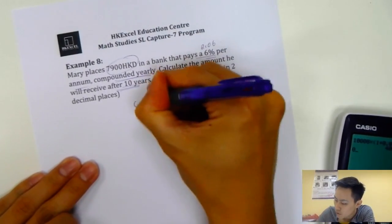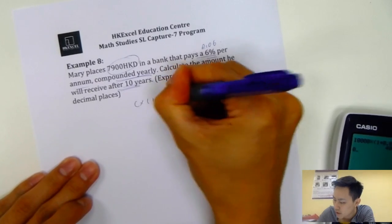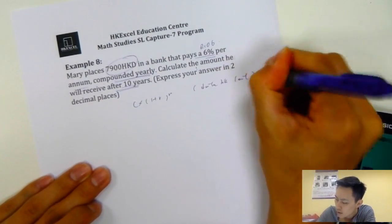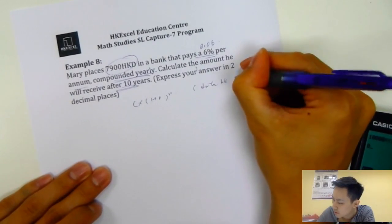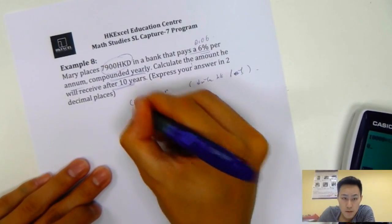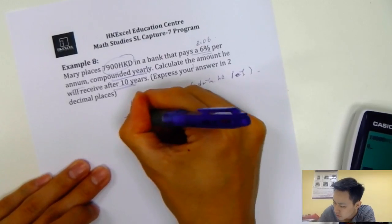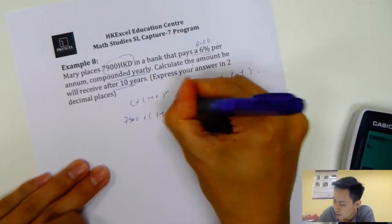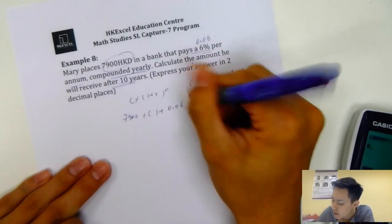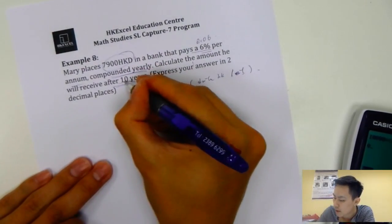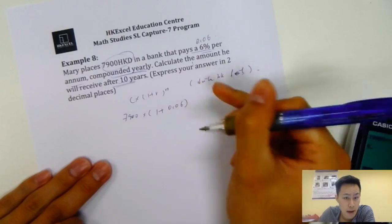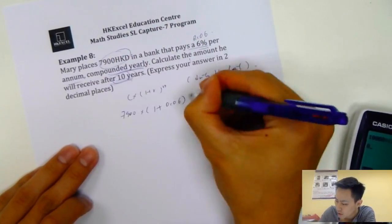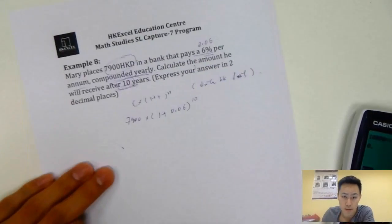How do you do that? First, you need to use the equation Z times 1 plus r power n. This is on the data booklet. Z means the original capital, the amount you put into the bank. Then 1 plus the interest rate, which is 0.06, close the bracket. Power n, where n is the compound time. How many times compound? Compound 10 years, so it will be power 10.